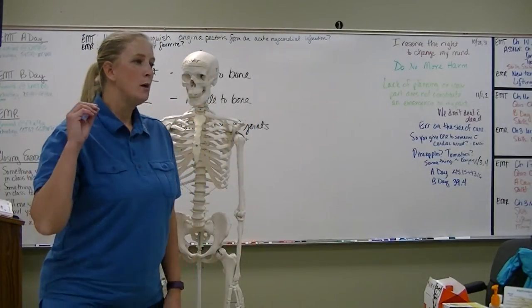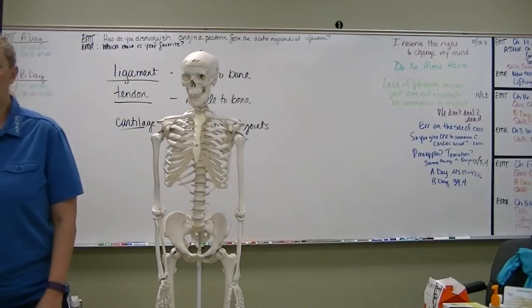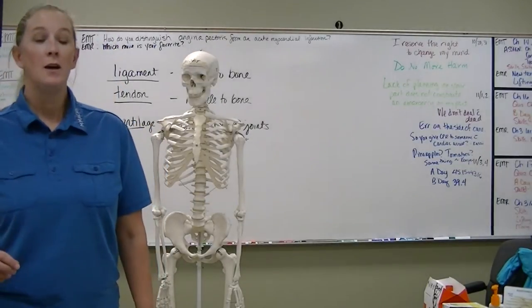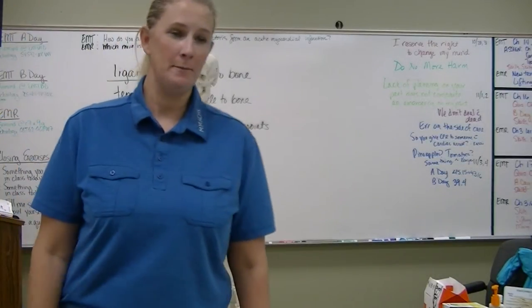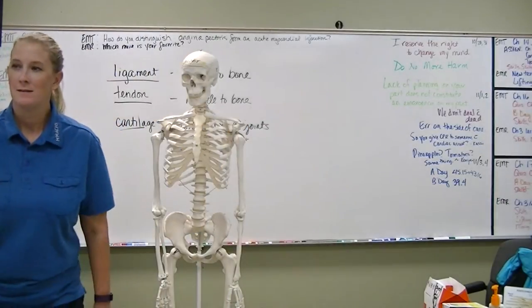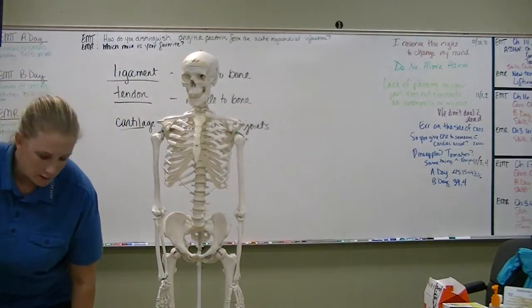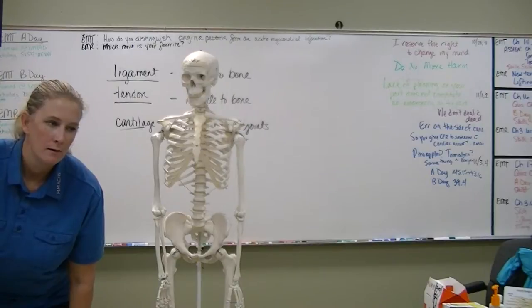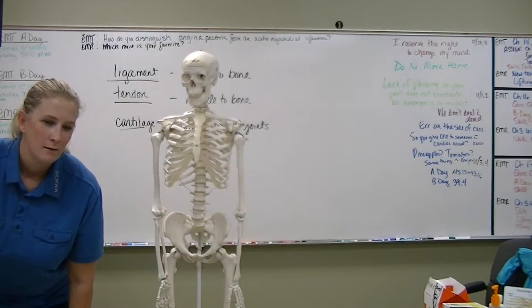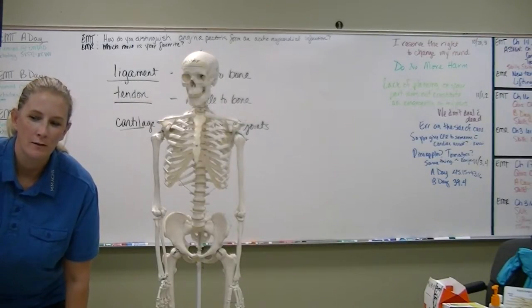Now how about your posterior tibial? Behind your tibia. So where's that going to be? It's going to be on the inside. Inside of your ankle and the very back. Posterior tibialis is right here. Once you find your own, find your partner.